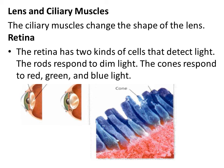The rods and cones send signals to the brain along a short thick nerve called the optic nerve. The optic nerve begins at the blind spot, which is an area of the retina that has no rods or cones. Your brain interprets the signals as an upright image and combines an image from each of your eyes into a single three-dimensional image. This is how the eye helps us to see objects.